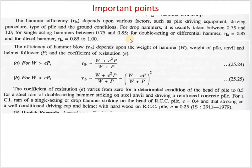The hammer blow efficiency (ηb) depends on the weight of the hammer, the weight of the pile, the anvil helmet, and the coefficient of restitution. The coefficient of restitution varies from 0 for a deteriorated pile head condition to 0.5 for a steam ramp. For field problems, values are taken from code; for exam problems, these constants will be provided. You must be familiar with the formula and all its terms.